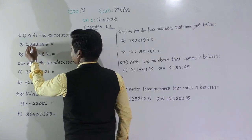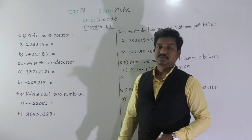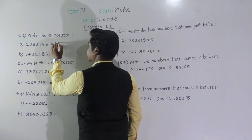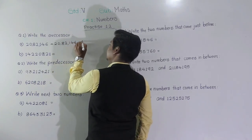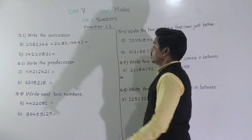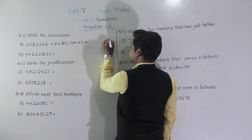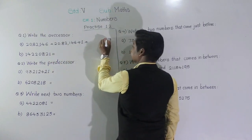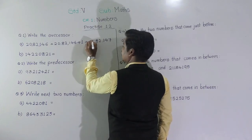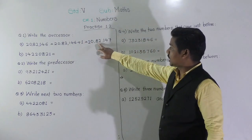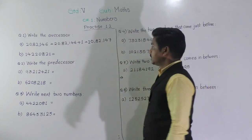So let us find the successor of this number, which is 20,82,146. If we add 1 in this, we will get the successor. We add 1 at the ones place: 6 plus 1 is 7, and all remaining digits stay the same. So 20,82,147 is the successor of this given number.